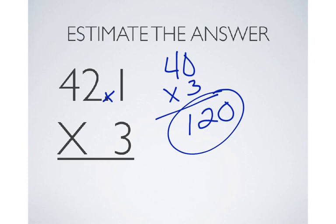We multiply it as if it were, in this case, a three-digit number times a one-digit number. 3 times 1 is 3, 3 times 2 is 6, and 3 times 4 is 12.